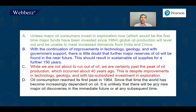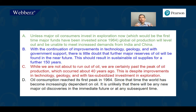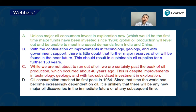Let us see the options now. Option A is talking about investments — unless major oil consumers invest in exploration now, which would be the first time major funds have been invested since 1964, global oil production will level out and be unable to meet increased demands from India and China. Now look at this option — it's huge. It's not possible for you to remember all of these, and there are three more options. The second one is talking about continuation of improvement in technology. The third is talking about past production, which was 40 years ago. The fourth is that oil consumption has reached its peak in 1964. Pause the video and see it for yourself, because you will not have so much time in the real exam.